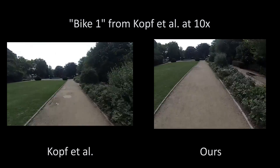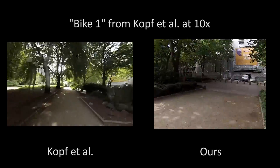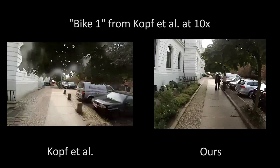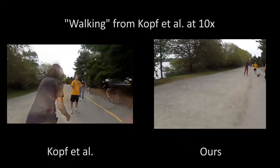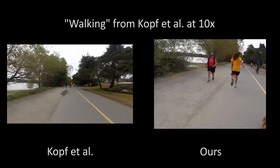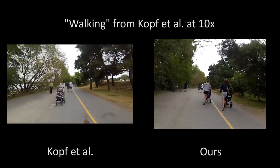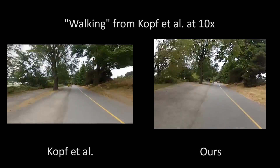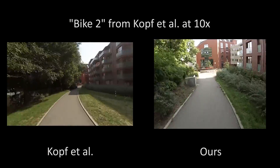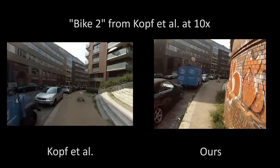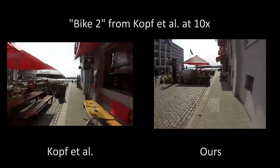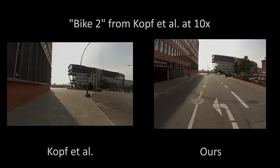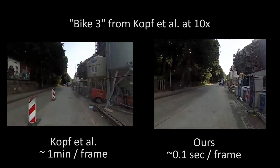Here we compare to a set of videos from Kopf et al. The Kopf et al. method is based on 3D reconstruction, while ours is based on 2D tracking. Our results are comparable, with a little less consistent constant motion, but with many fewer artifacts on dynamic objects in the scene. Our results compare favorably; however, our method is hundreds of times faster.